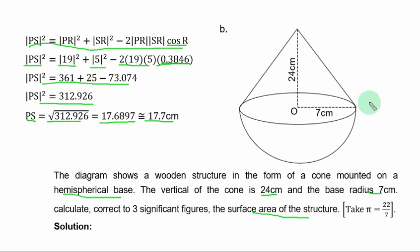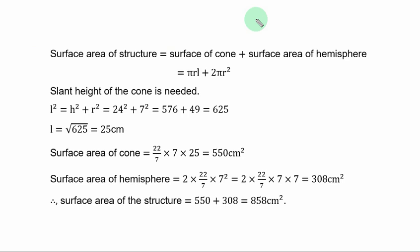That is very simple. So, surface area of the structure is surface area of cone plus surface area of hemisphere. You have the addition of the two formulas.